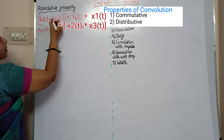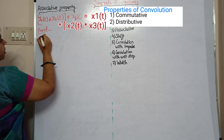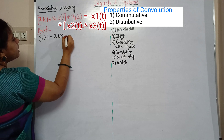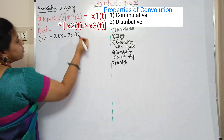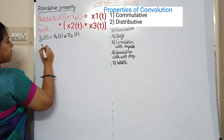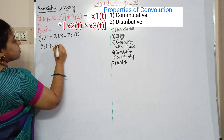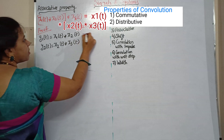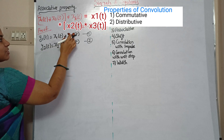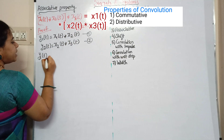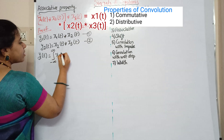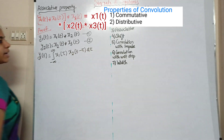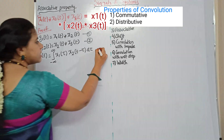First, in x1(t) convolution x2(t), y1(t) is considered. So y1(t) equals x1(t) convolution x2(t). This is the first equation and this is the second equation. Now for the first equation, how do we get it? y1(t) equals the integral from minus infinity to infinity of x1(τ) times x2(t minus τ) dτ. This is the third equation.